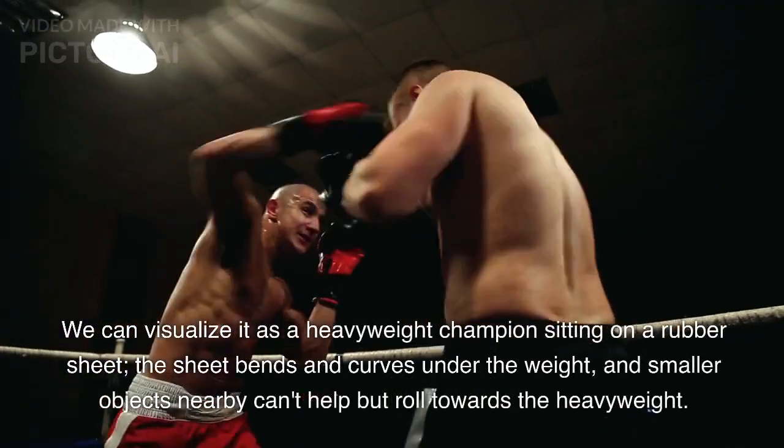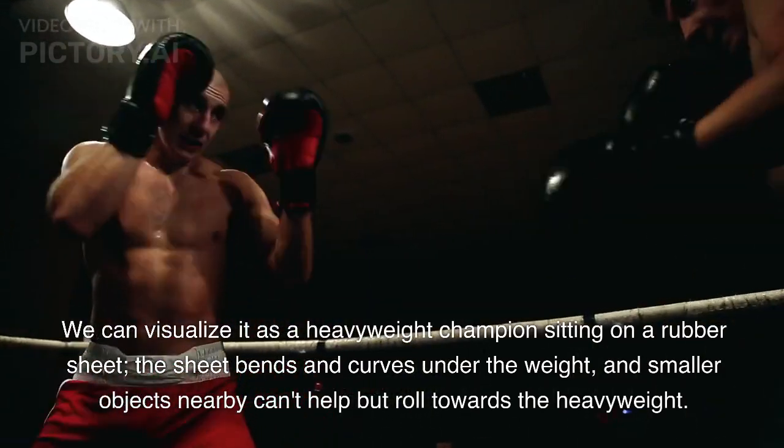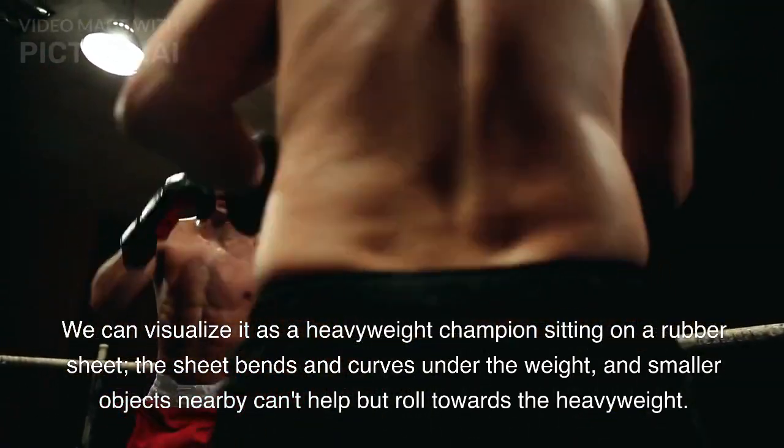We can visualize it as a heavyweight champion sitting on a rubber sheet. The sheet bends and curves under the weight, and smaller objects nearby can't help but roll towards the heavyweight.